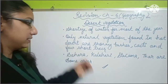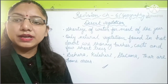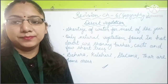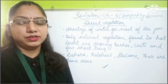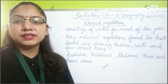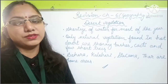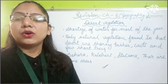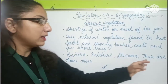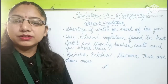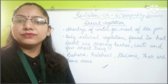In areas with oases, date palm trees grow due to the availability of water, and there is a little more vegetation. The Nile Valley in the Sahara Desert is a known oasis with good vegetation. Major desert areas of the world include the Sahara Desert, Kalahari Desert, Atacama Desert, Thar Desert, and many more areas known for their desert vegetation.